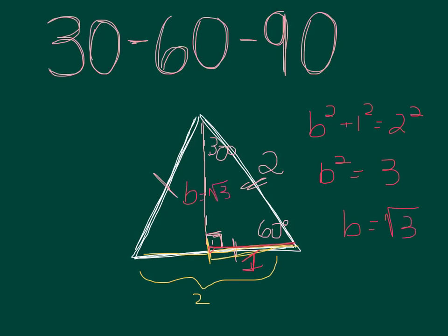So therefore the other generalization we can make is that the long leg is half of the hypotenuse times the square root of 3.